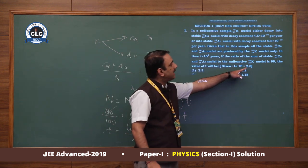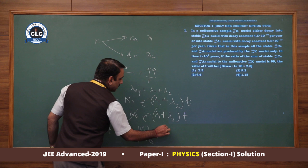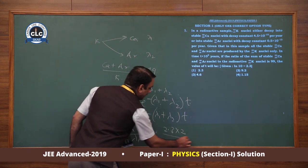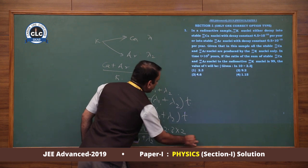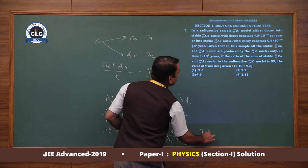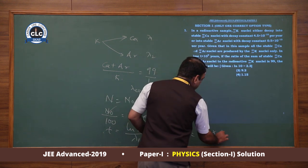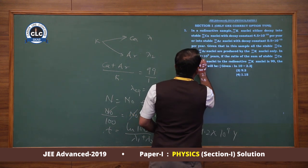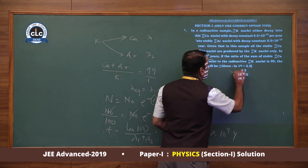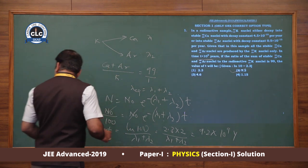Substituting the values of lambda 1 plus lambda 2, we get T = 2.3 × 10^9 years. So T is 9.2 × 10^9 years, making the second option correct.